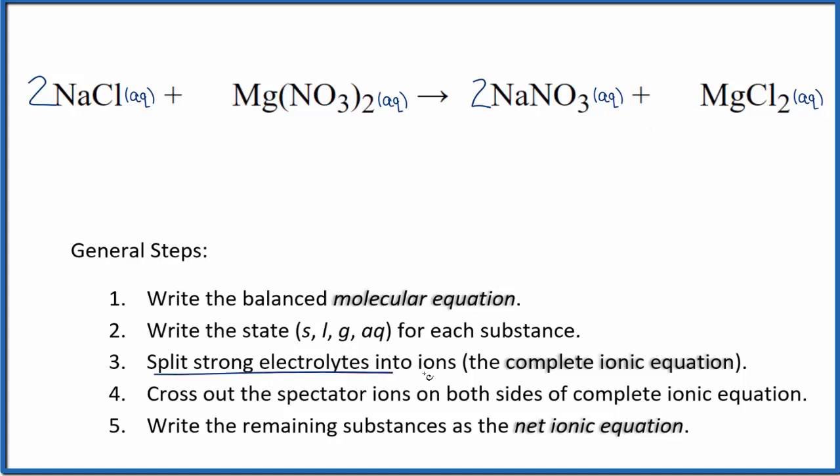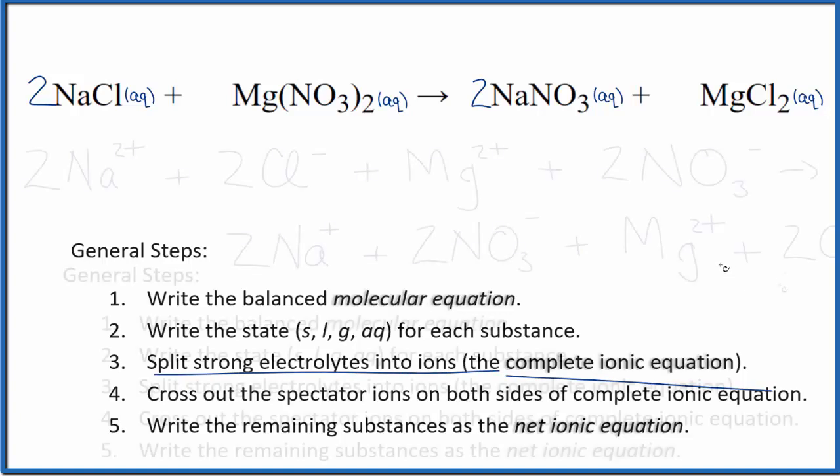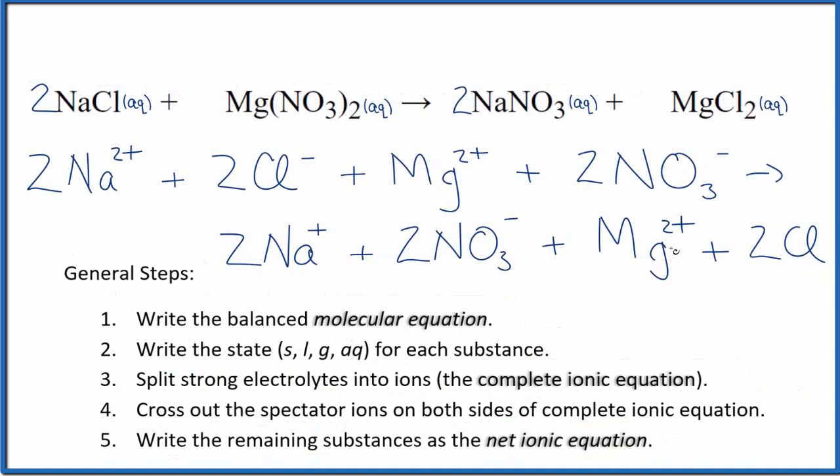It's helpful to split the strong electrolytes into their ions for the complete ionic equation to really understand why. In the reactants, that's on top. The products down here. All of the ions are the same. The order's a little bit different, but they're the same thing. That means nothing's happened.